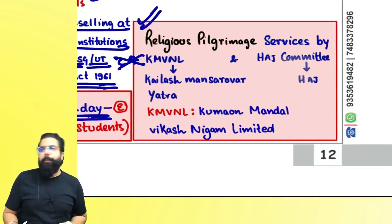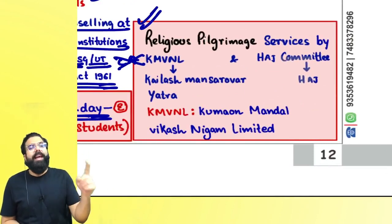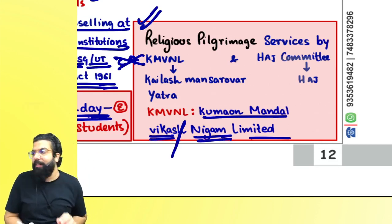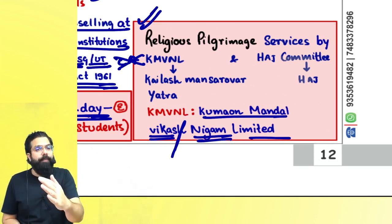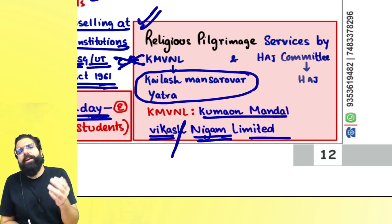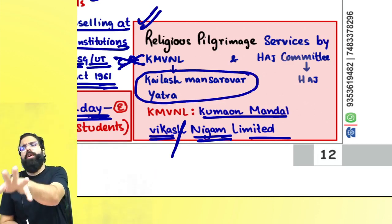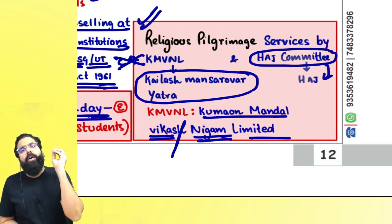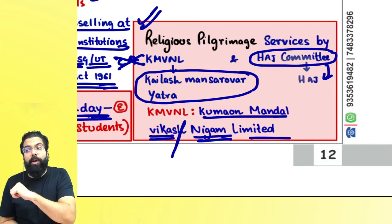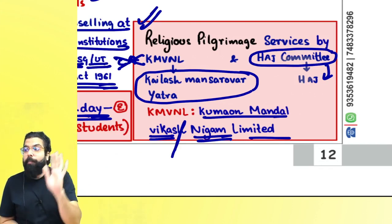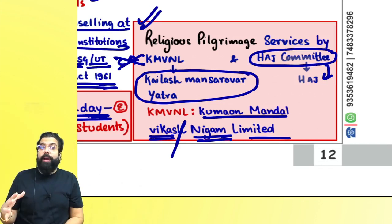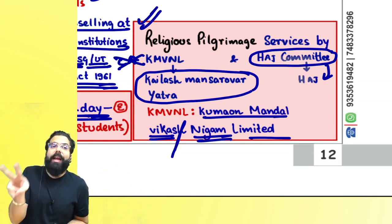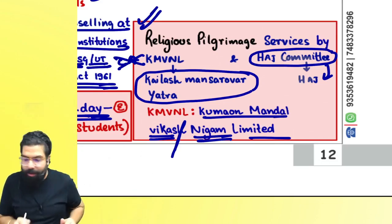The government has also exempted certain religious pilgrimages. KMVNL (Kumaon Mandal Vikas Nigam Limited) organizing Kailash Mansarovar Yatra — there will be no GST. For Muslims, when the Hajj Committee organizes Hajj, there will also be no GST. Be very careful: if KMVNL organizes an Uttarakhand trip, it is taxable. If any other person like a private class organizes Kailash Mansarovar Yatra, it will be taxable. Only KMVNL doing Kailash Mansarovar Yatra is exempt, and only the Hajj Committee doing Hajj is exempt.